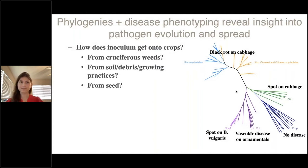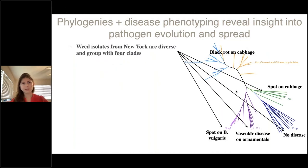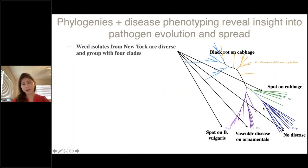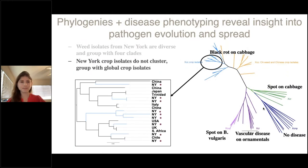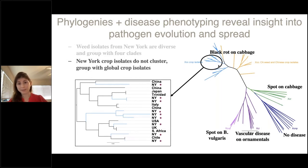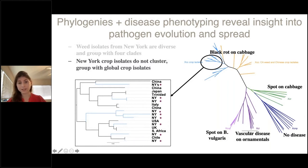Looking at weed isolates in New York, we notice first that they don't group together, and they also don't group with isolates that cause black rot of cabbage — they cause different disease types and are genetically pretty diverse. So these are probably not a major source of inoculum from New York weeds. Zooming in on a subset of the phylogeny for isolates that do cause black rot on cabbage, we see that isolates from New York crops didn't group together as we might expect of bacteria persisting in New York. Instead, New York strains grouped more closely with isolates from China, Japan, and Trinidad than with each other.